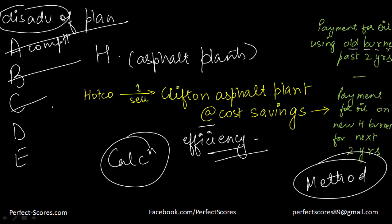Option D says a decrease in the demand for asphalt. That is not a concern here — whether demand increases or decreases does not affect this process. So D is not relevant.